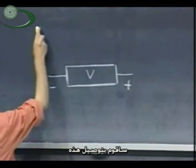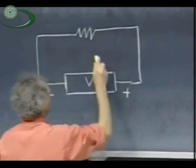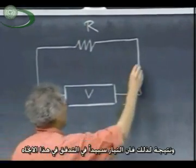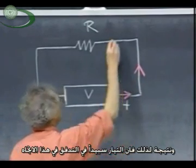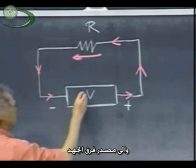I'm going to connect this. I have a resistor here, R, and as a result, the current will start to flow in this direction, this direction, this direction.